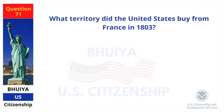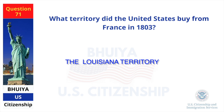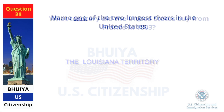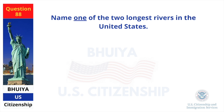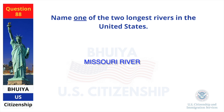What territory did the United States buy from France in 1803? The Louisiana Territory. Name one of the two longest rivers in the United States. Missouri River.